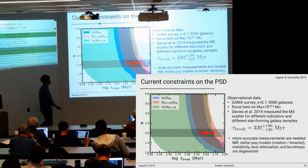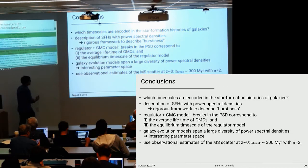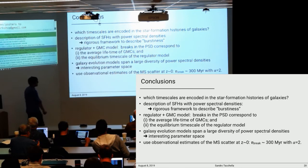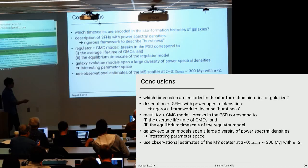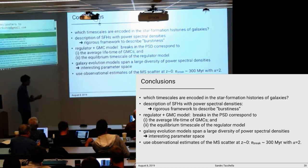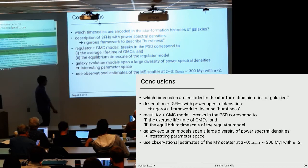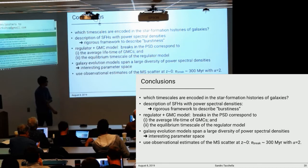To conclude: the power spectrum may be a nice way to describe burstiness — usable in simulations quite naturally, though much more challenging in observations. I showed a simple regulator plus GMC model with two breaks in the power spectrum: one corresponds to the average lifetime of GMCs, the other to the equilibrium timescale of the regulator model. Different galaxy evolution models span quite a wide range in parameter space, making it interesting to think more about this observationally. Using rough observational estimates at redshift zero, we find a tau_break of roughly 300 million years. Thank you for your attention.